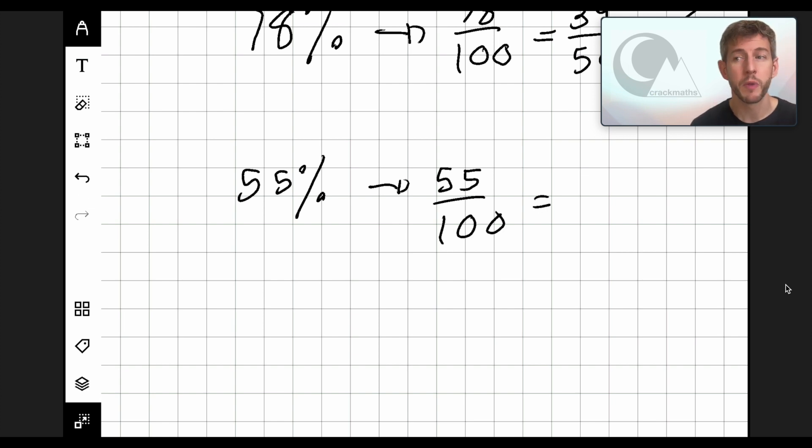Now this time, what can I divide both the top and the bottom of this fraction by? Now, I know that 55 is in the 5 times table, and I also know that 100 is in the 5 times table. So 55 divided by 5 is 11. I'm going to put an arrow here and put divide 5, just to remind ourselves that that's what we've done. And here, 100 divided by 5, I'm going to put an arrow here and say divide 5, it's going to be 20.